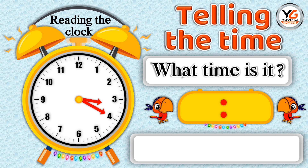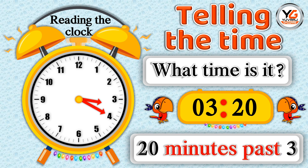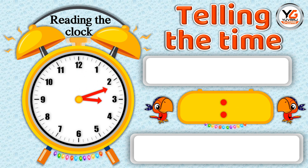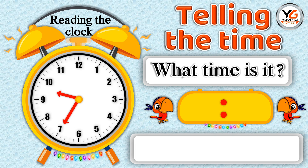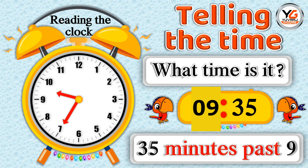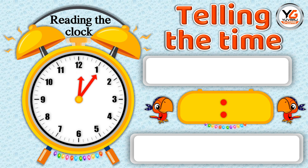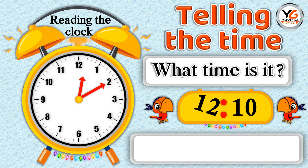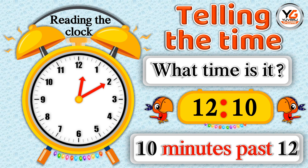What time is it? 3.20 — means 20 minutes past 3. What time is it? 9.35 — means 35 minutes past 9. What time is it? 12.10 — means 10 minutes past 12.